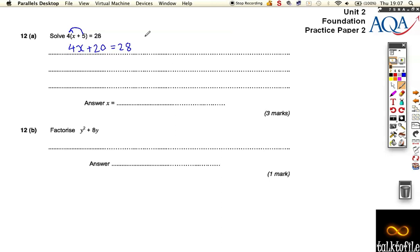So what we need to do now is solve this. We need to take away 20 from both sides of the equation. It's the opposite or inverse of plus 20 is minus 20, and we get 4x is equal to 8.